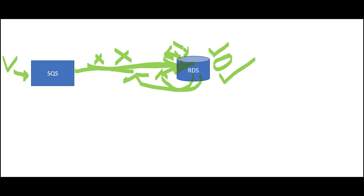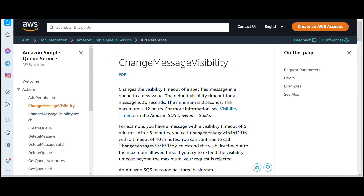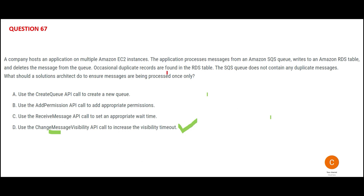So for us, this is the right answer. Always remember: if there are no duplicates in the queue and your consumer has duplicates, it is most likely a problem with Change Message Visibility. Option A — Create Queue API — will not work, because your data is in one queue. If you create a new queue, it will not work.